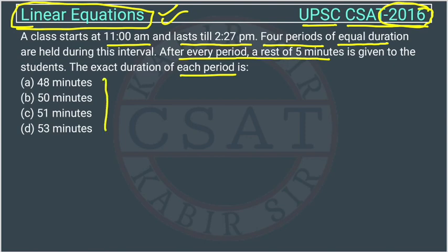This question you can solve through options also. You will take — suppose this is the answer — 50. You will multiply it with 4 because we need 4 periods, and then you will add the breaks of 55 minutes. So there will be how many breaks? There will be only 3 breaks. But here I am telling you the whole process.